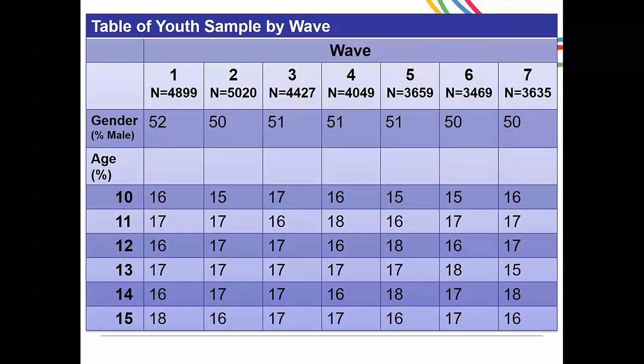Currently we have seven waves of data available through the UK Data Service. Here is a table showing how many 10 to 15-year-olds participated in each wave, the percentage of males across all waves, and the breakdown by age 10 through 15 in each wave. You can see that pretty consistently there's about 16 to 17 percent, sometimes going up or down, but it's pretty consistent across all waves.